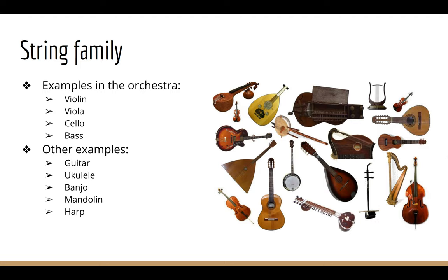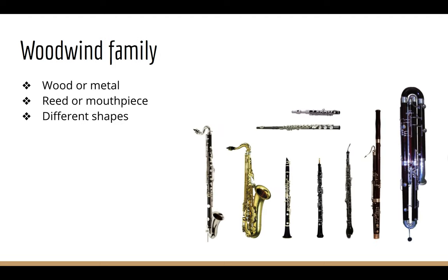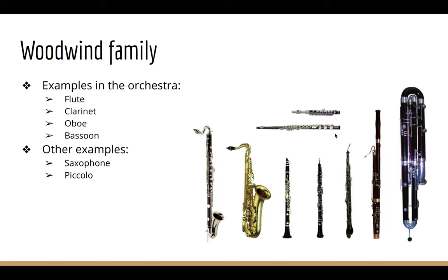Our next instrument family is the woodwind family. Woodwind instruments are usually made of long, hollow tubes of wood or metal. The sound is made by blowing through a small piece of wood called the reed, or across a small mouthpiece. Woodwind instruments can be many different shapes and sizes, as you can see in the picture. Orchestra examples include the flute, clarinet, oboe, and bassoon. Other examples include the saxophone and the piccolo.